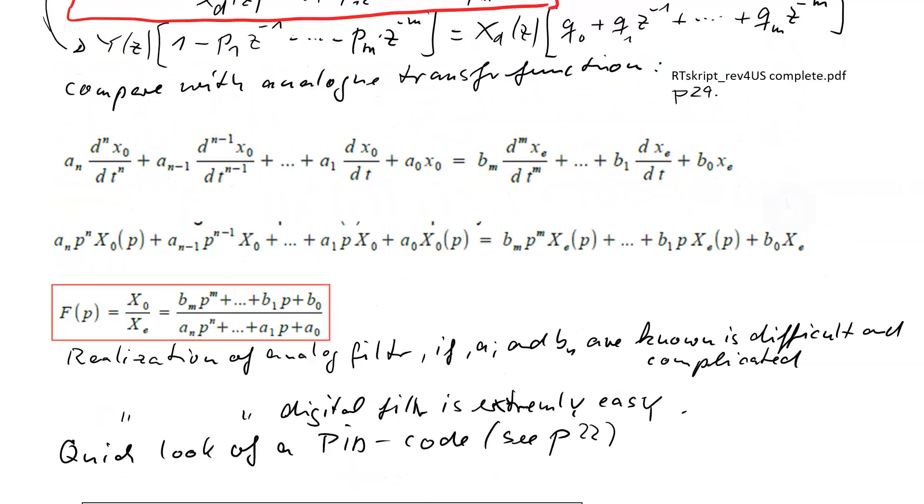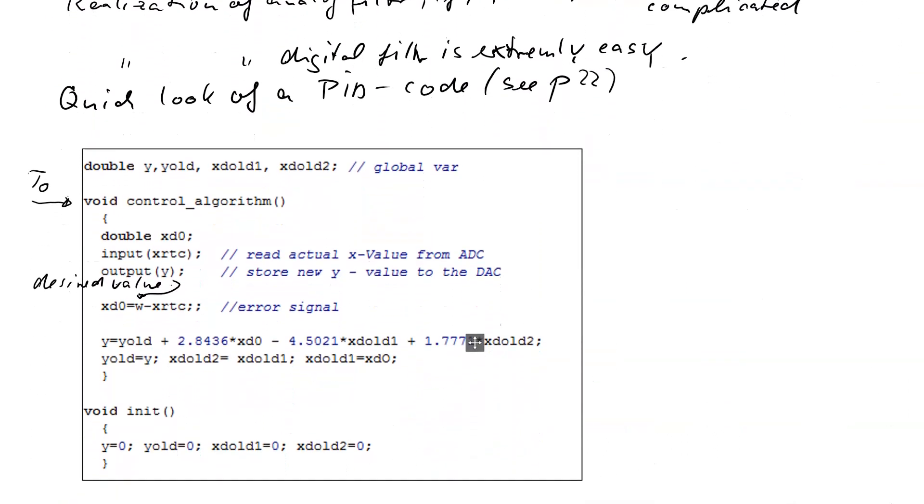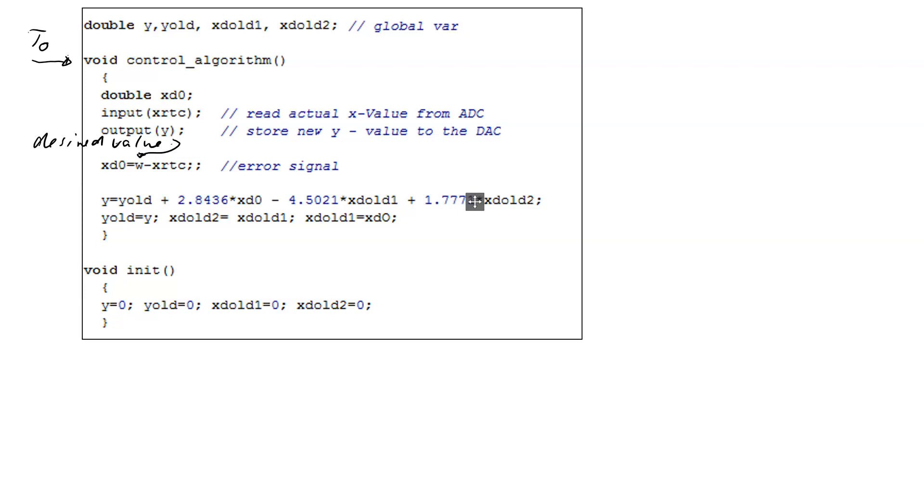So this is just a digital PID algorithm running under C or you can program this of course in any other computer language, the principle is the same. And if you have now a general filter, then of course these numbers of P's and Q's could be larger, but the principle is the same, then just this line is a little bit longer. And you need more variables here. So far, you'll see, if you know the F of z, you can program it quickly, that's it, then if we know the qi and pi programming is simple. Okay.